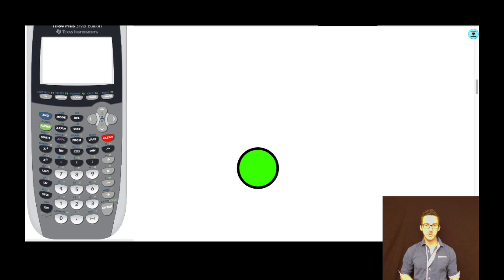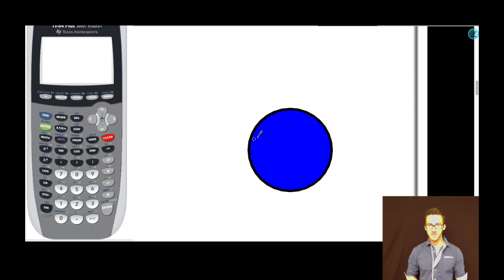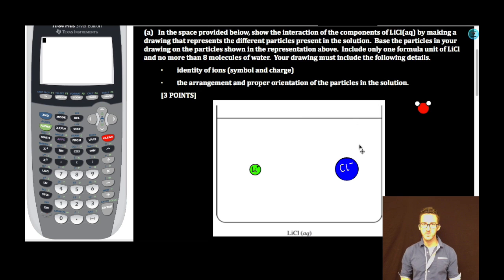Now, don't forget, we're asked to include symbol and charge. This is going to be the lithium ion, Li+. It's really important. This one is going to be the chloride ion, Cl-. Again, don't forget those charges. You won't get the point otherwise. All right, now it's time to throw in some water there.